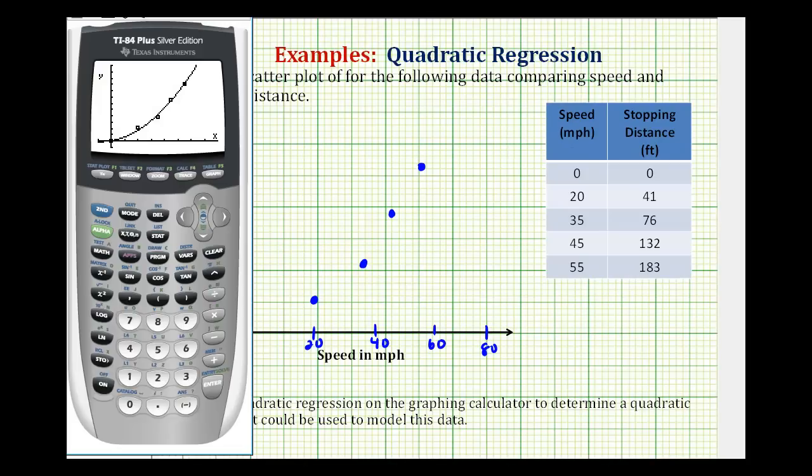So go back to the calculator. So we'll use the table to do this. But let's first press second window, so we can adjust the table set. What we want to do is go down to the independent variable, and change this to ask. So we'll press enter. And now when we go to the table, by pressing second graph, we can type in any x value that we want.